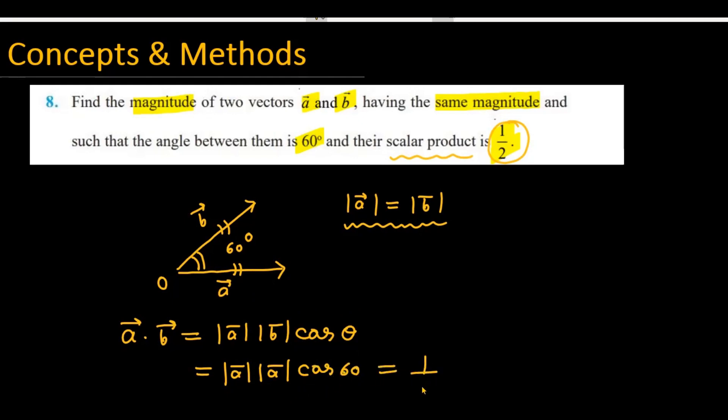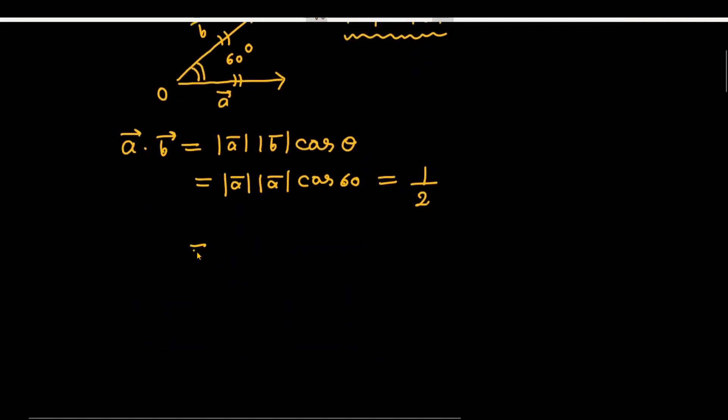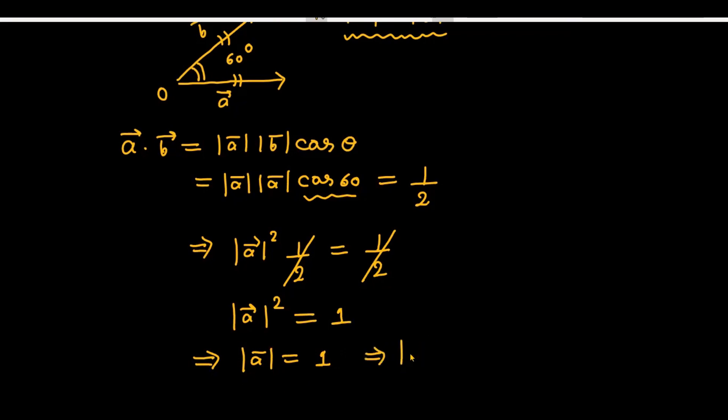Simplifying the equation: |A|² × cos 60° = 1/2. Since cos 60° = 1/2, we get |A|² × 1/2 = 1/2. Therefore |A|² = 1, which gives |A| = 1. Since the magnitude is always positive and |A| = |B|, the answer is 1.